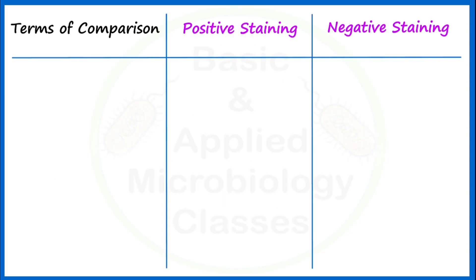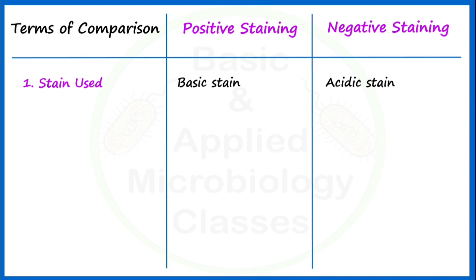The first point of difference is the stain used. In case of positive staining, we use basic stain, and in case of negative staining, we use acidic stain. Always remember, a stain is a kind of chemical or dye — a coloring agent — that improves the visualization of microorganisms by increasing contrast between the background and the object during microscopic examination.